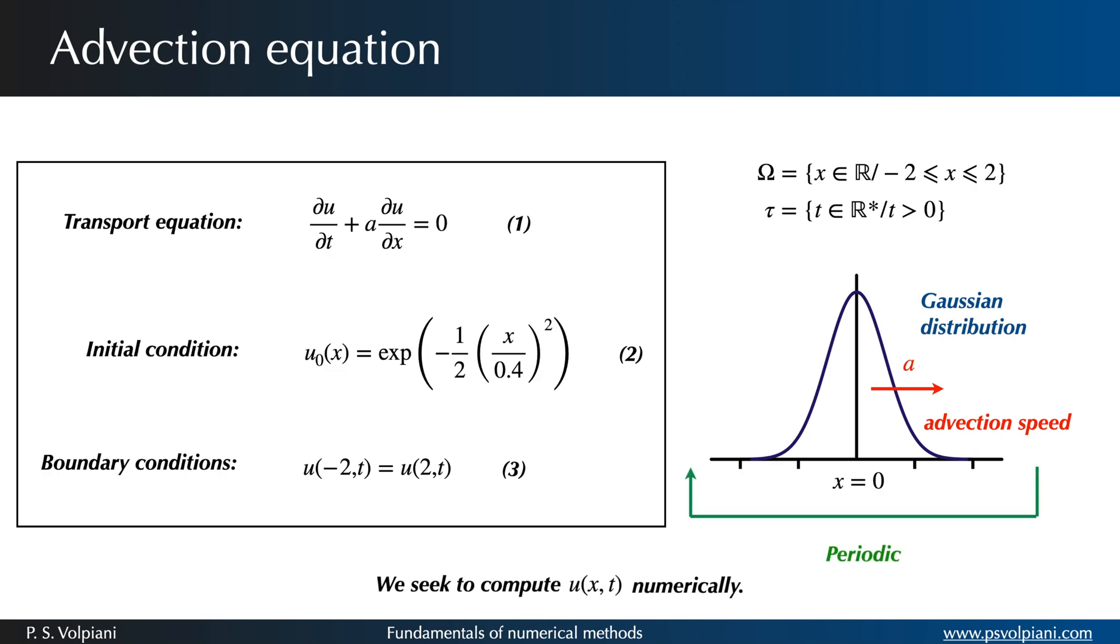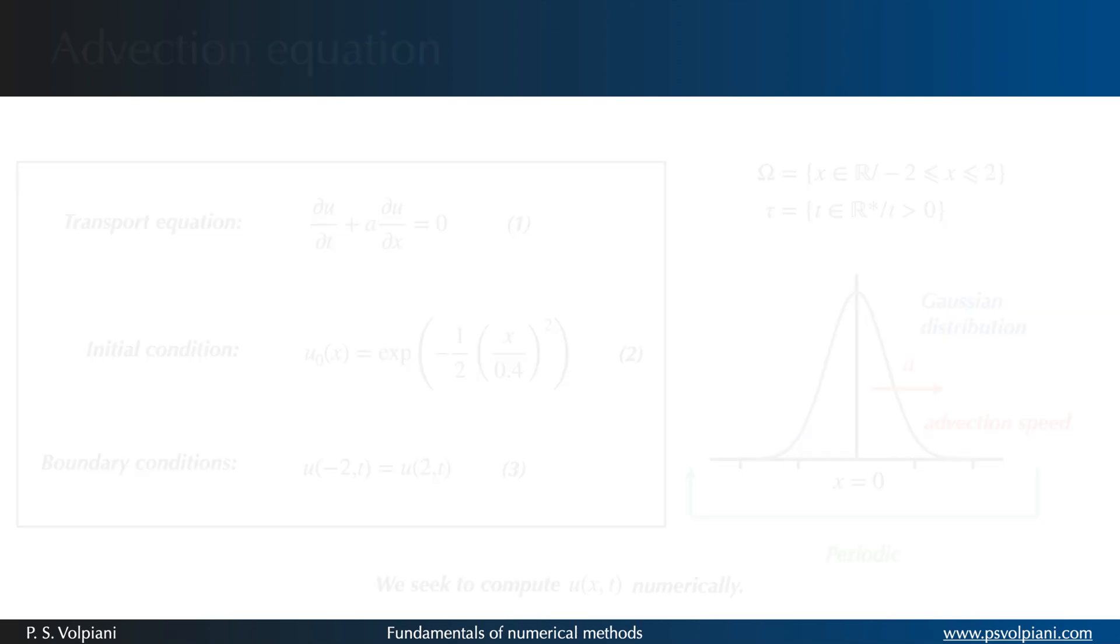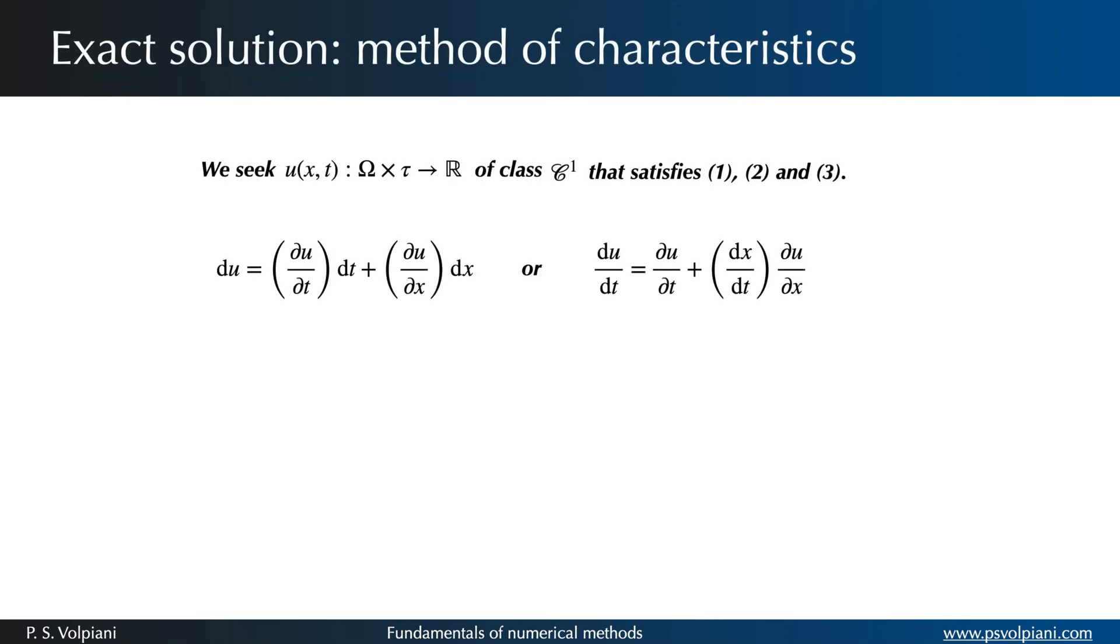Let's show now that the advection problem has a unique solution and that it can be obtained by the method of characteristics. Consider the differential of U. We call the characteristic curve gamma the curve where dx/dt equals A. Therefore the transport equation can be written as follows.